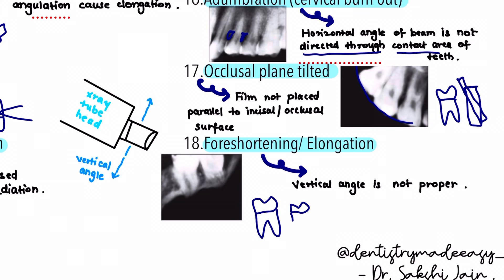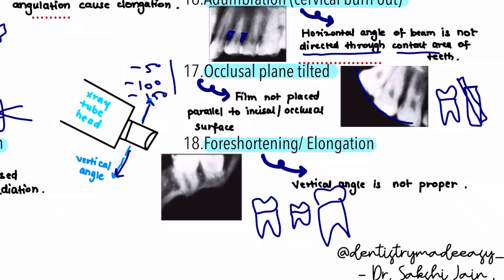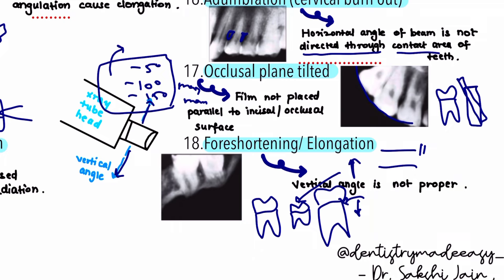The last projection error is foreshortening or elongation, where the teeth do not appear their proper size — either shortened or elongated — because the vertical angulation is not correct. Various fixed angulations are given for the maxilla and mandible. If the vertical angle is increased, it leads to foreshortening; if decreased, it leads to elongation. In the bisecting angle technique, two factors are critical: the patient position should be ideal with the occlusal plane parallel to the floor, and the angulation should be within normal limits appropriate for the teeth being radiographed.